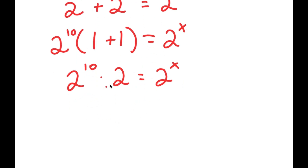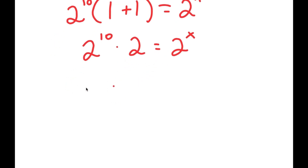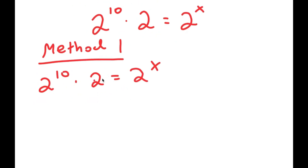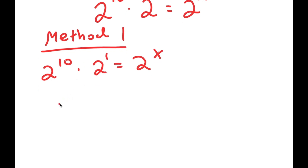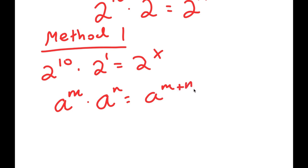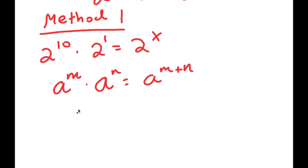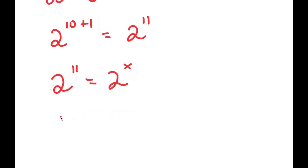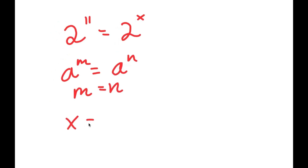From here, I can solve this in two methods. For method 1, I have 2 to the power of 10 times 2 equals 2 to the power of x. I'll rewrite 2 as 2 to the power of 1. Using the rule a to the power of m times a to the power of n equals a to the power of m plus n, I get 2 to the power of 10 plus 1, which equals 2 to the power of 11. So 2 to the power of 11 equals 2 to the power of x, meaning x equals 11.